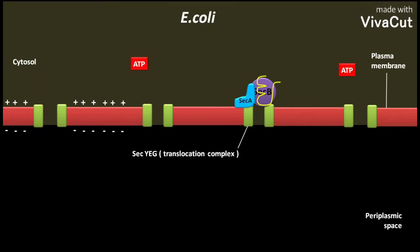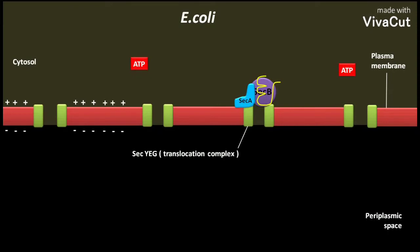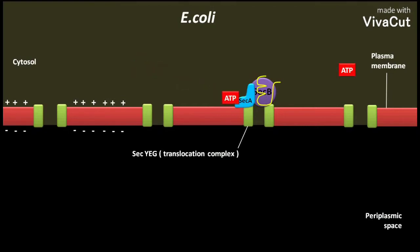SECA acts as both a receptor and a translocating ATPase. The cytosolic ATP binds to SECA, and SECB is released.